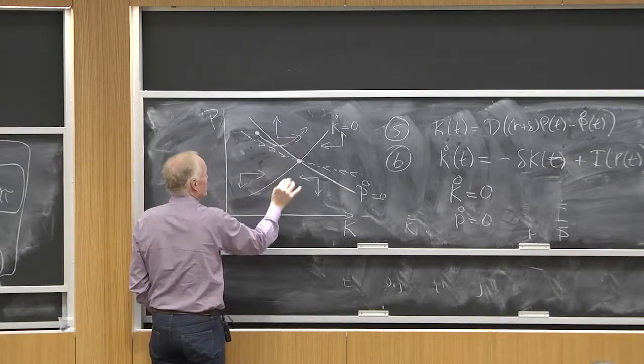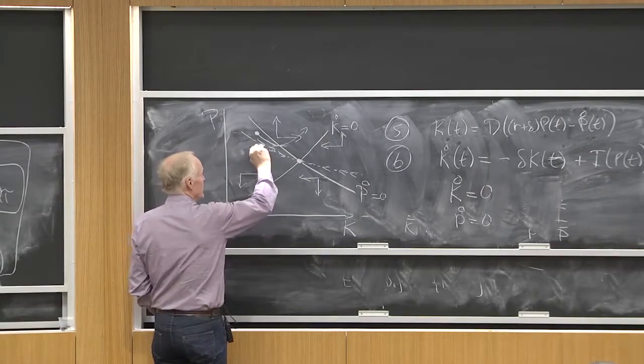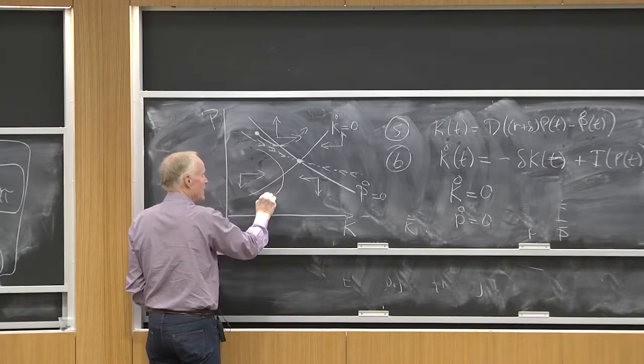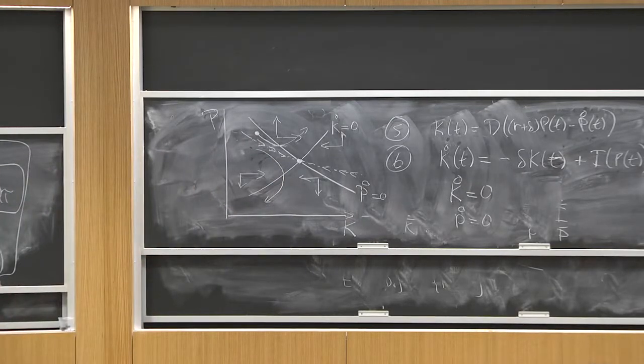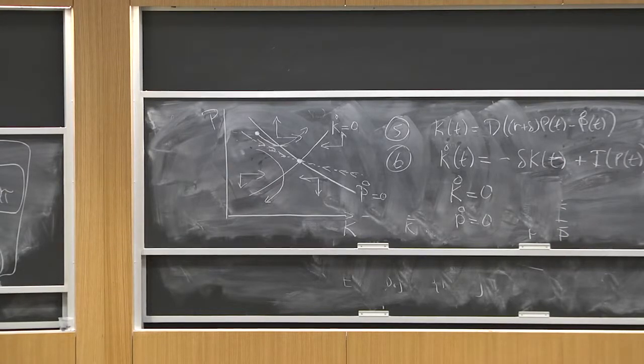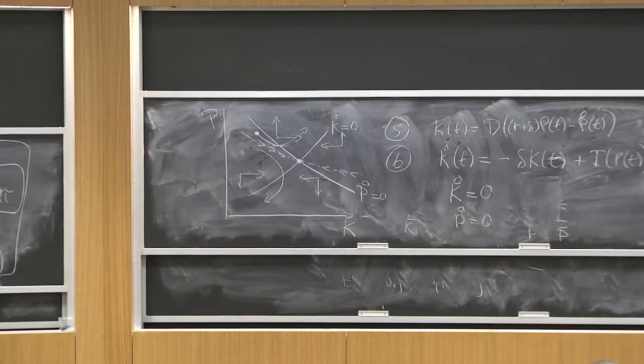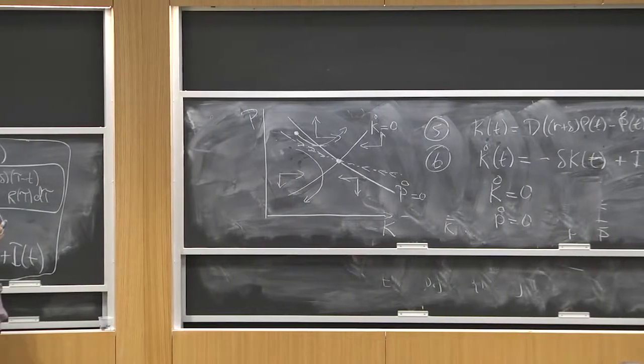Because this is p dot equals zero, so I've got to be moving horizontally here. And here, I'm going to go like that. That's how the equilibrium is going to look. Now, you might say, well, geez, if I start at the wrong point, I'm going to blow off to infinity. I'm going to go off way up here or way down there.